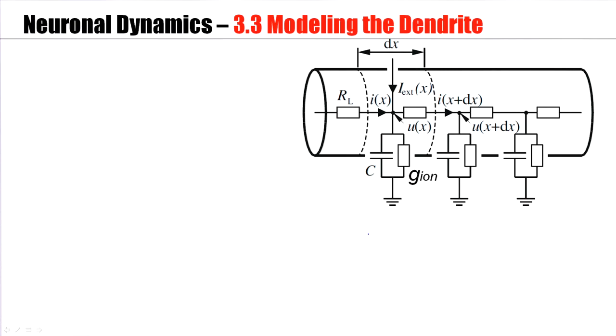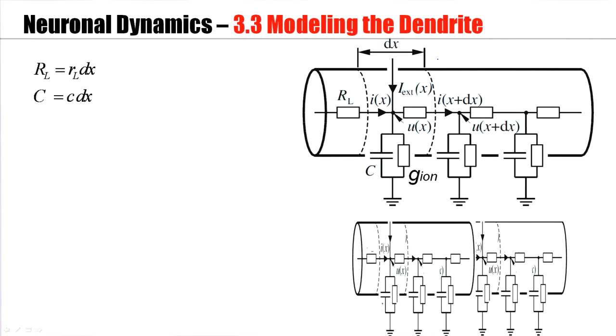Now, our segments have a certain size, they have a certain length scale, and this length scale is denoted here by dx, but dx is my choice. I've chosen a certain segment size, and with the same right, I could choose a smaller segment.